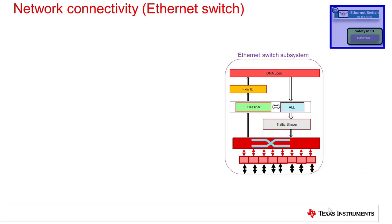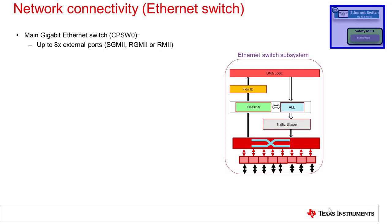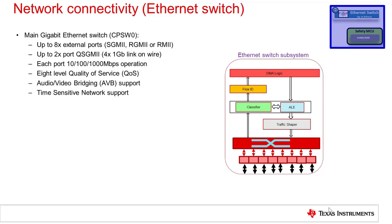The Jacinto 7 processors contain up to two Ethernet switch controllers with similar features. The main-domain Ethernet controller supports up to eight external ports with various protocols including RMII, RGMII and SGMII, supporting up to one gigabit link performance. An additional QSGMII mode with the appropriate external transceiver can allow transport of four gigabit links onto a single wire pair. Time-sensitive network support and audio-video bridging support features are also supported in hardware, allowing for scheduling and traffic shaping with eight levels of priority.